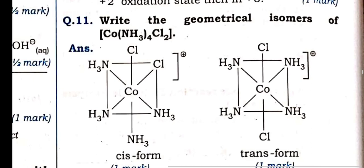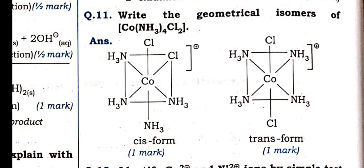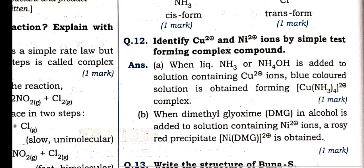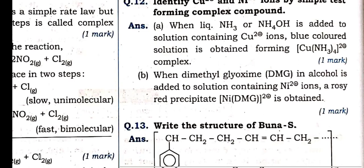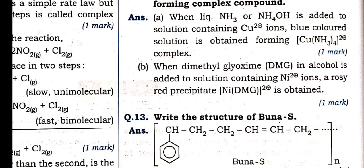Geometrical isomers for the complex — cis and trans. Chlorine at 1,2 position is cis; at 1,6 position is trans. Identify Cu²⁺ and Ni²⁺ by simple test: liquid ammonia/ammonium hydroxide is added to copper solution — blue color solution obtained (copper ammonium salt). Dimethylglyoxime in alcohol is added to nickel solution — rosy-red precipitate (nickel DMG) is obtained. So we can distinguish them.